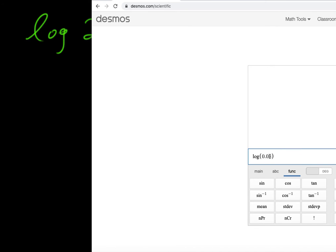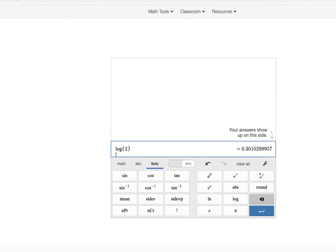It says use your calculator to find log of 2 and log of 20. We already did that essentially, so I'm not going to write it down. Log 2 gave us this answer, log 20 gave us this answer, and it's that simple.